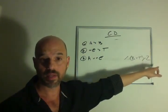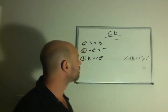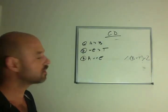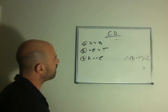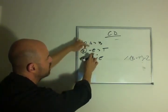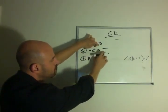or Z is true. So what does the constructive dilemma allow us to do? The constructive dilemma allows us to use A or not E to get B or T.